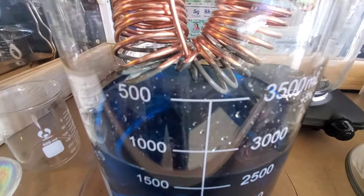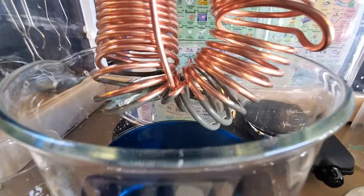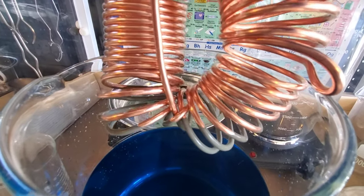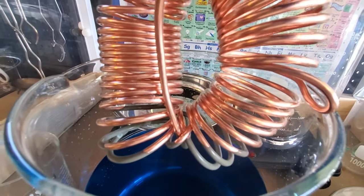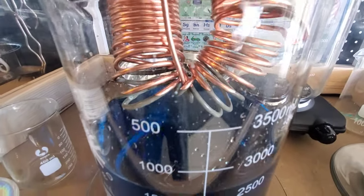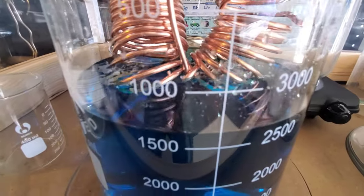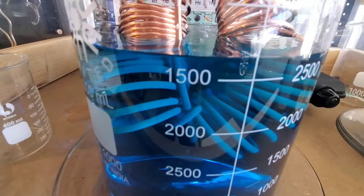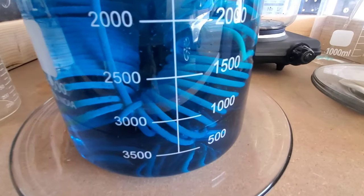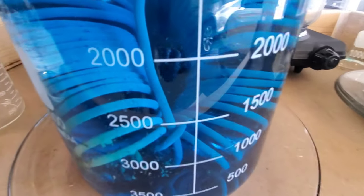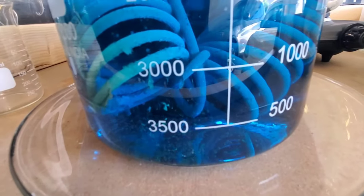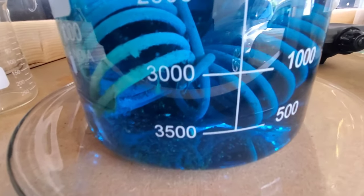Now you can already see instantly that reaction taking place. That gray color on there is actually the silver already forming into a silver cement. There's that silver already falling down towards the bottom of the beaker here.